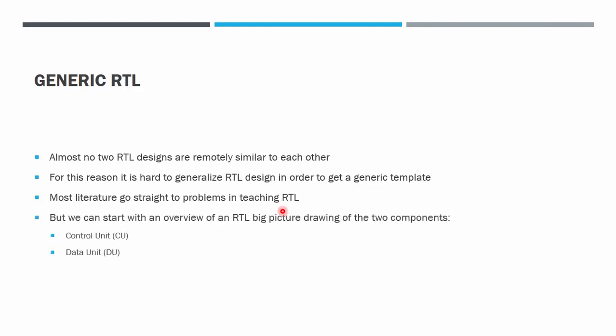However, we can start with an overview of an RTL by looking at a big picture drawing of them that consists of two components. The two components are Control Unit and Data Unit. These are the two components that we need to design and coordinate so that the system works as we expect.